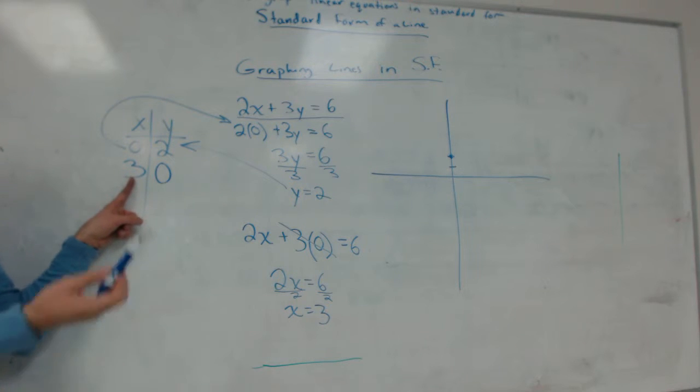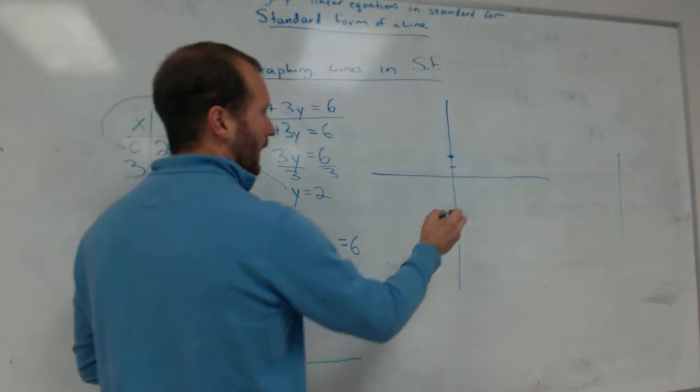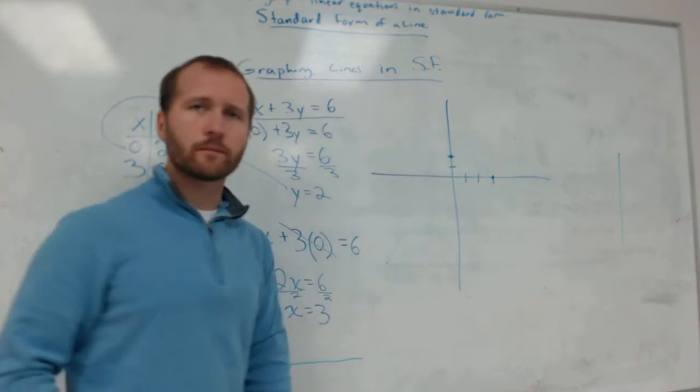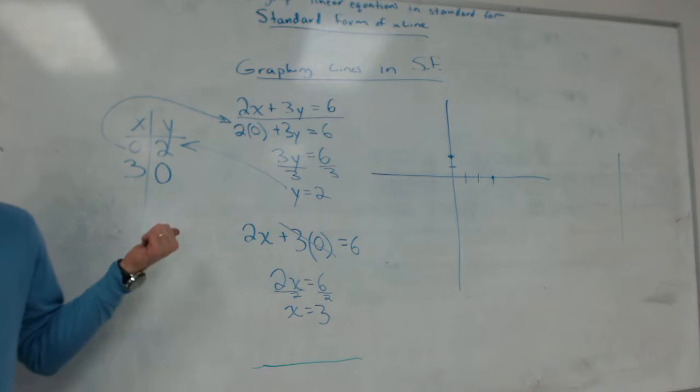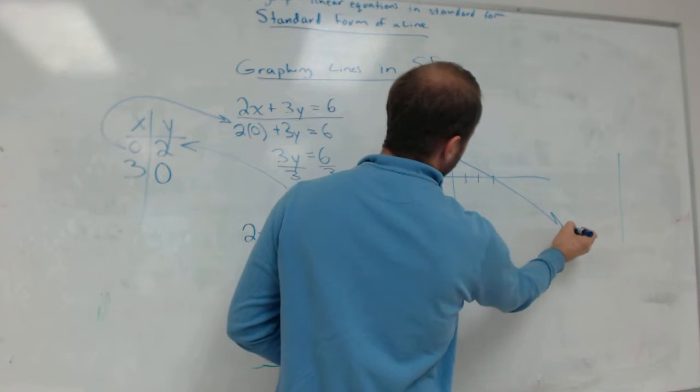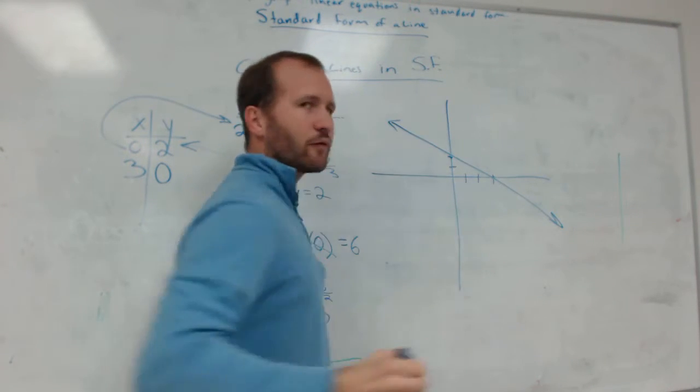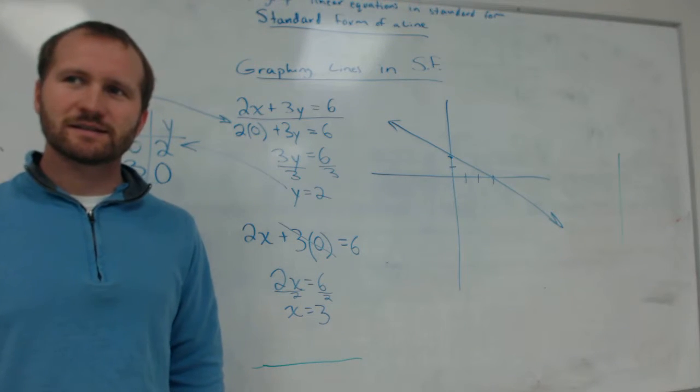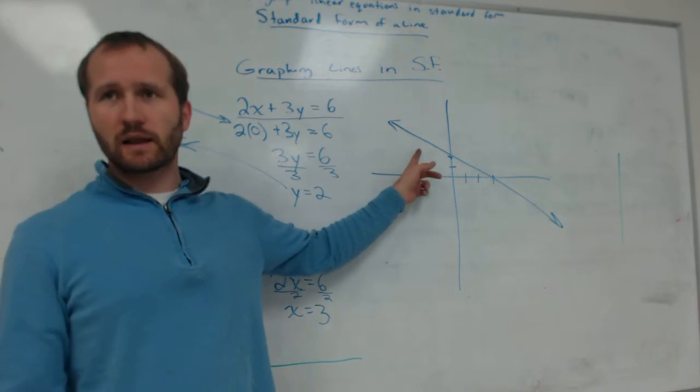Now I'm going to put this point on my graph. 3, 0 is the point. And that point is 1, 2, 3, 0. It's right there. And with standard form, I'm going to graph these with just 2 points. So I'm going to connect those 2 points. It's the straightest line that I've ever free-handed. Maybe. What about the whole thing where it's 3? And I'm done. That's it.